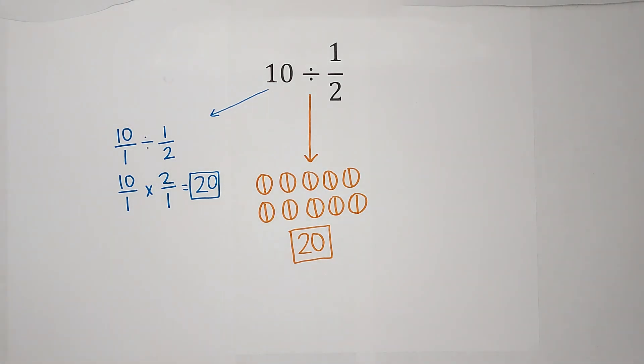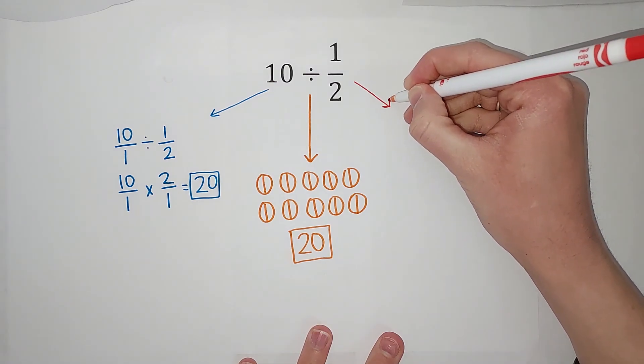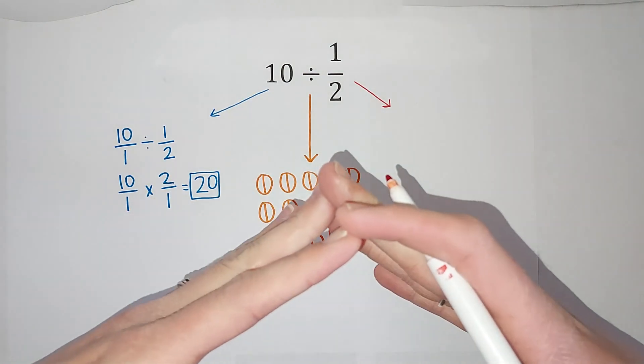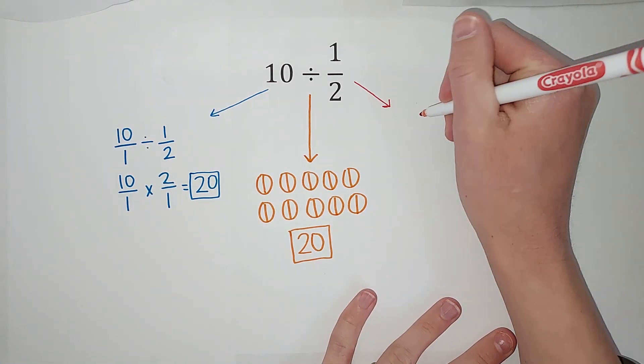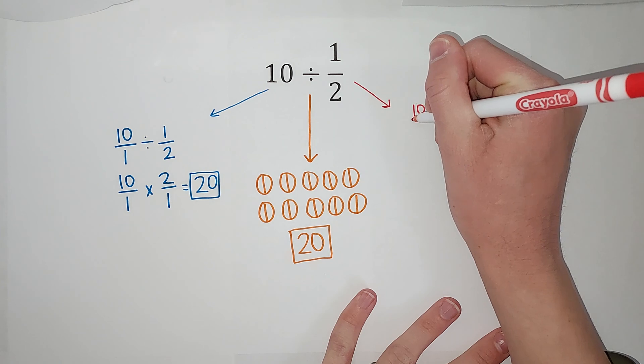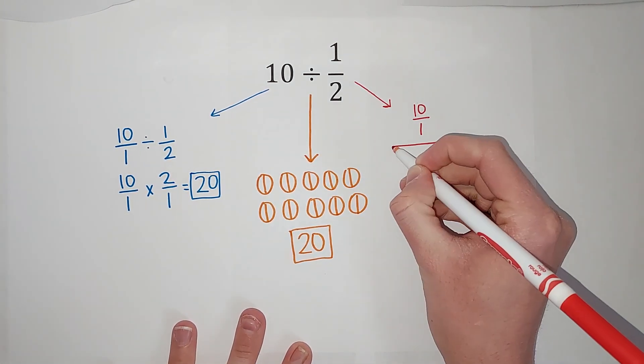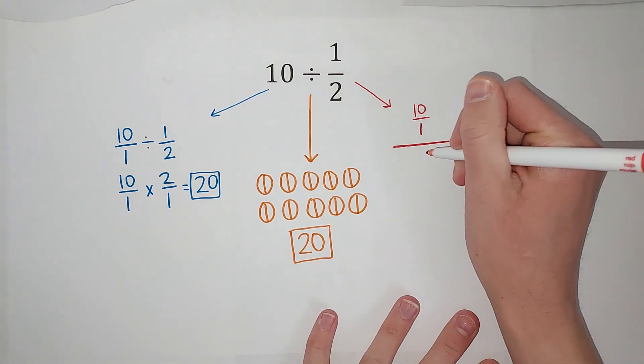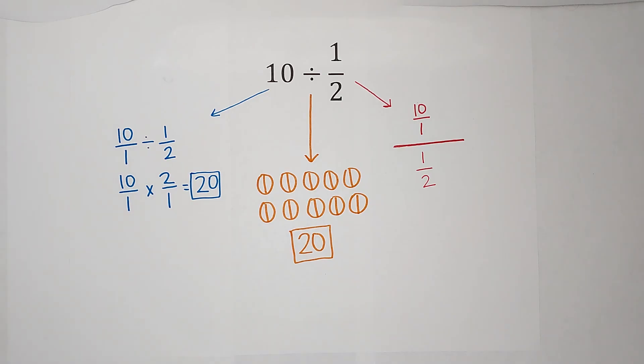So there's kind of a visual way to see it. A more mathematical way to see it, to prove that this works, is I could write this as a bigger fraction. So I could write it as turning 10 into a fraction, 10 over 1 over, we're turning into a fraction with a fraction. This is like craziness. Divided by one half. I know that looks a little scary. Two fractions making a fraction.